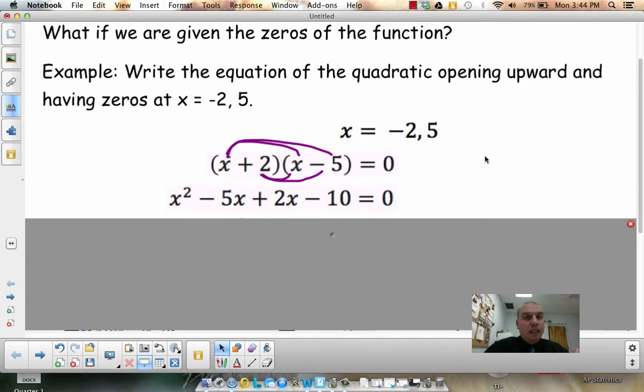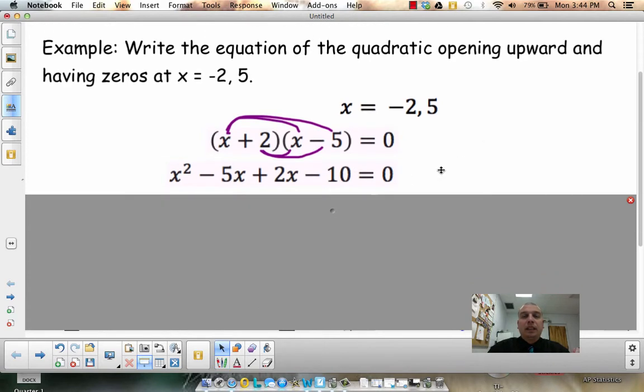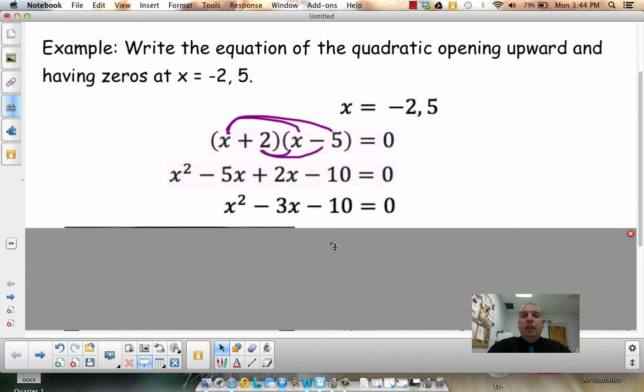All right, so this is all stuff that we did before. And now we just have to clean it up. So I've got a negative 5x plus 2x. So x squared minus 3x minus 10 equals 0.